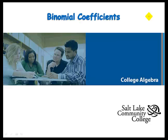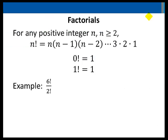In this lesson we look at binomial coefficients. Recall factorials: n factorial equals n times n minus 1 times n minus 2, continuing down through 3 times 2 times 1. Note that 0 factorial is equal to 1, and 1 factorial equals 1.